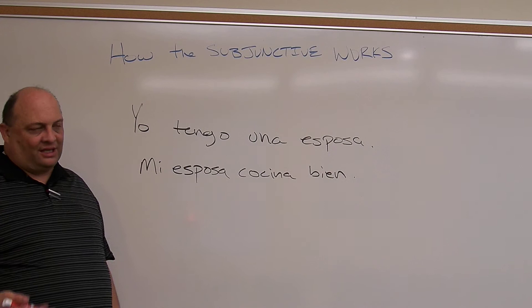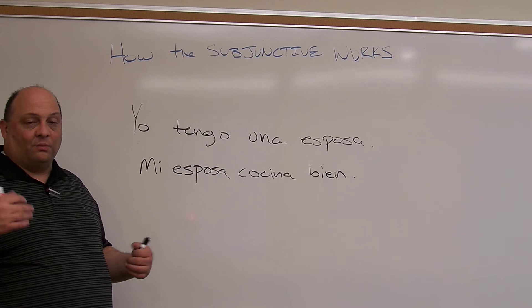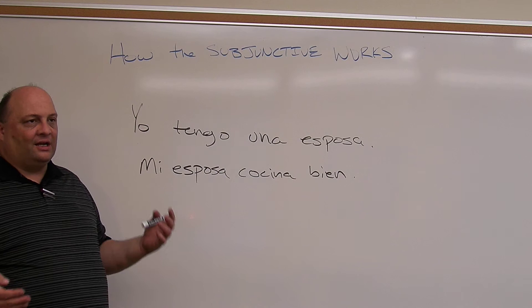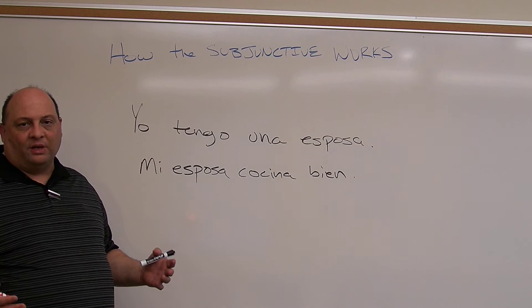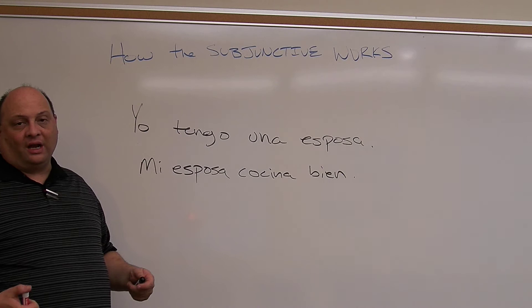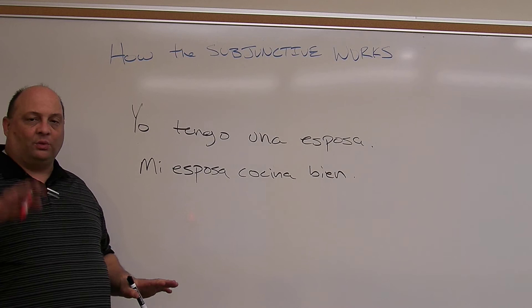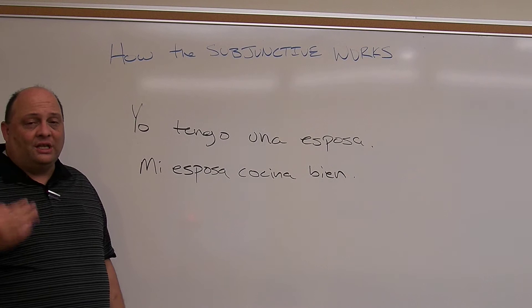The subjunctive is a different mood. It is subject to different things that are happening in the sentence, and so the verb has to be formed in a different formation. You can look at the other video I have posted that shows how to form the subjunctive and the command forms. We're going to talk about how we use the subjunctive — how you determine when you do need to use it.